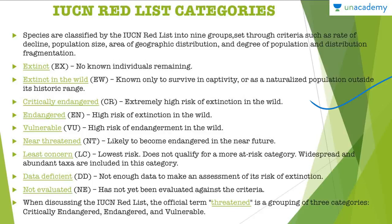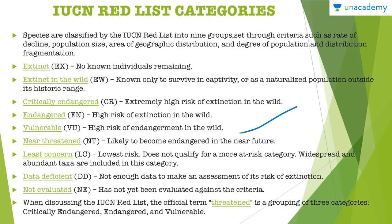Critically Endangered species have an extremely high risk of extinction in the wild and need immediate protection. Endangered species have a high risk of extinction in the wild. Vulnerable species have a high risk of endangerment in the wild. Near Threatened species are likely to become endangered in the near future — not endangered as of now, but habitat loss and other factors may push them there. Least Concern species have the lowest risk; they do not qualify for a higher risk category, and widespread and abundant taxa are included here.